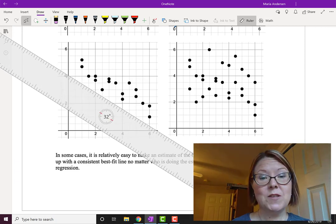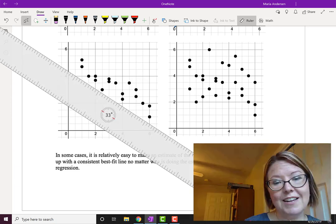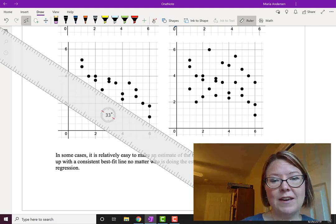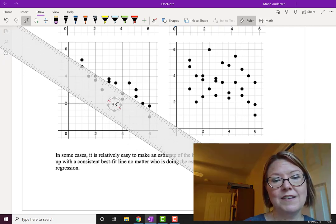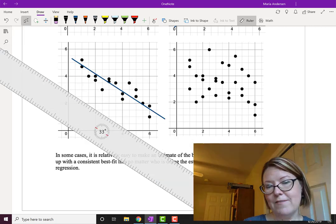I'm going to position my ruler so that it looks like it might be about the right slope for the set of values and then I'm going to move that straight edge so that roughly half the points sit to the left and half the points sit to the right. There's a line of best fit.